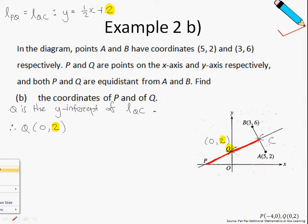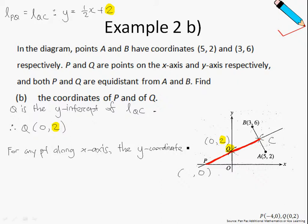Now let us move on to find the coordinates of P. Since P lies on the X-axis, we can say that the Y-coordinate of P is 0, because for any point along the X-axis, the Y-coordinate is equals to 0.